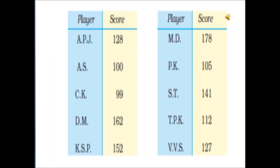Now look at the scorecard of a few players. APJ has scored 128 runs. AS has scored 100 runs. CK 99. DM has scored 162 runs. KSP 152. MD has scored 178 runs. PK 105 runs. ST 141 runs. TPK 112 runs. And VVS 127 runs.